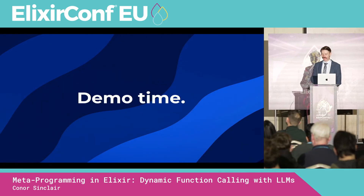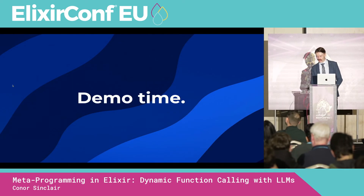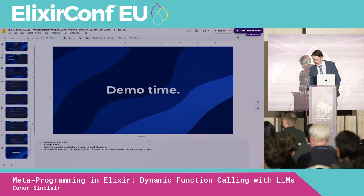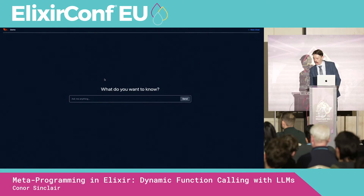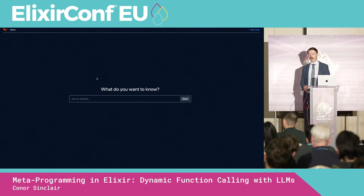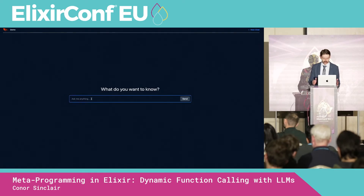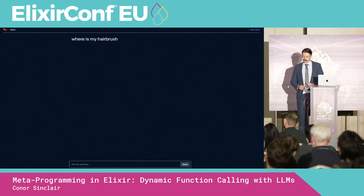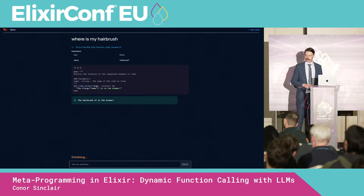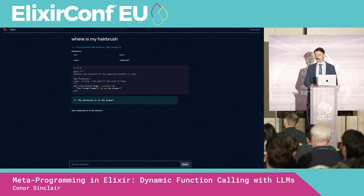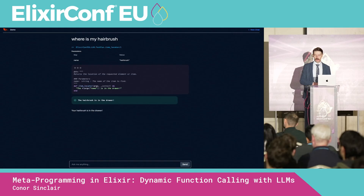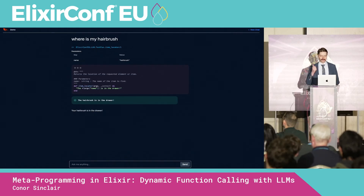Let's see it in action. Here I have a LiveView app hooked up to an LLM chain. Starting with a basic example from the Langchain docs: 'Where is my hairbrush?' It's gone away and called our item locator function, which I've already implemented, and it's found that the hairbrush is in the drawer — which is fantastic.